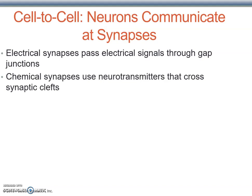We're now ready to take a look at how neurons communicate from cell to cell. The space between one neuron and the next, or from one neuron to an effector cell, is called a synapse. What we normally picture when we think about synapses is a chemical synapse — a synapse that uses a neurotransmitter released from the presynaptic cell that travels across the synaptic cleft to bind to a receptor on the postsynaptic cell.